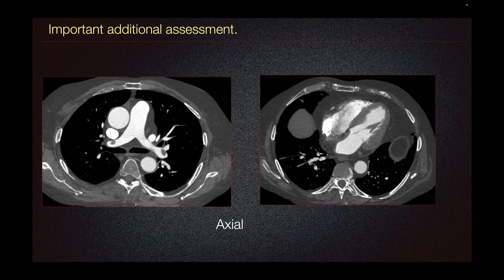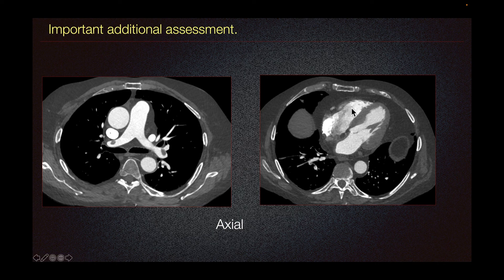An important additional assessment in patients with pulmonary embolism is looking at the size of the main pulmonary artery to look for evidence of increased pulmonary arterial pressure. Additionally, we look at the right heart for any evidence of right heart strain. This could be seen by enlargement of the right ventricle compared to the left, or bowing of the interventricular septum to the left.